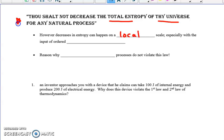So that's what I was saying. You can have a local decrease of entropy, especially with the input of ordered energy. So when you have ordered energy, you can decrease the local entropy. However, the overall entropy of the universe still has to increase, as we'll see in a minute. And this is the reason why biological processes, which are highly ordered, do not violate this law.